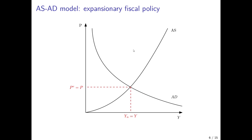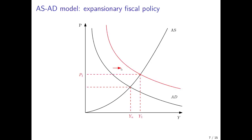We can now use these insights to analyze the effects of policy changes. We start with the AS-AD model and assume the short run equilibrium and the medium run equilibrium are initially the same — actual output equals natural output and the price level equals the expected price level. Now the government decides to pursue expansionary fiscal policy, such as investing in infrastructure. This would shift the AD curve to the right, resulting in higher output than natural output and a higher price level than price expectations.